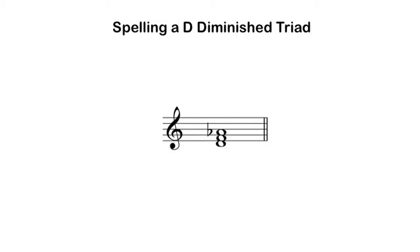There is a shortcut for spelling diminished triads similar to the ones I used for major and minor triads, but it does require an additional step. Since we don't have diminished scales, we need another way to use scale degrees to spell a diminished triad.